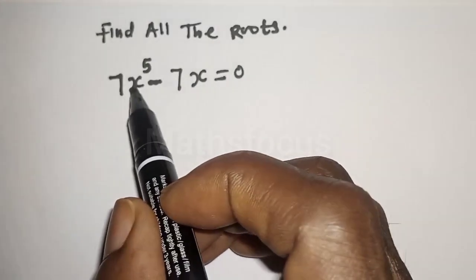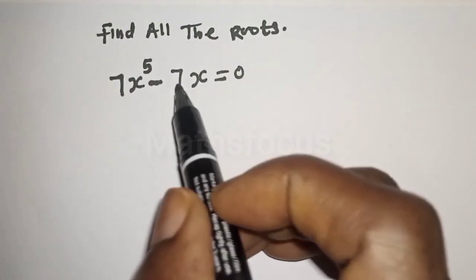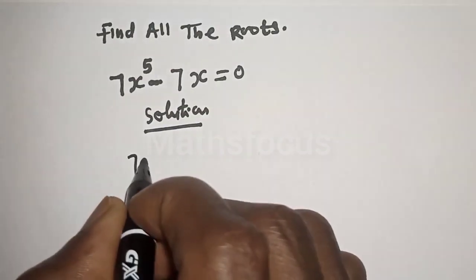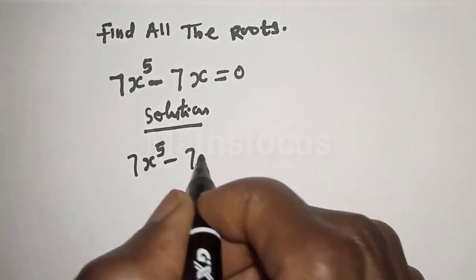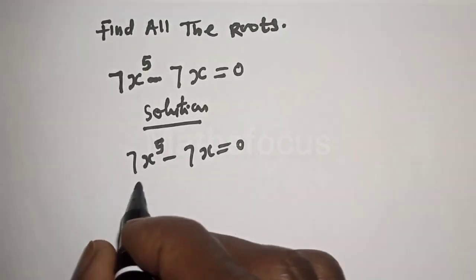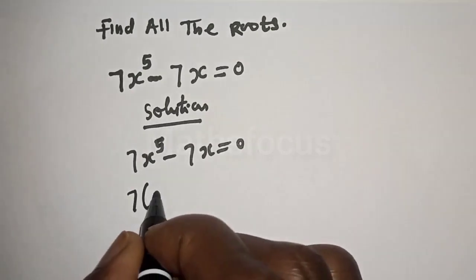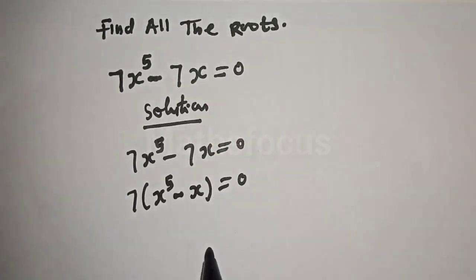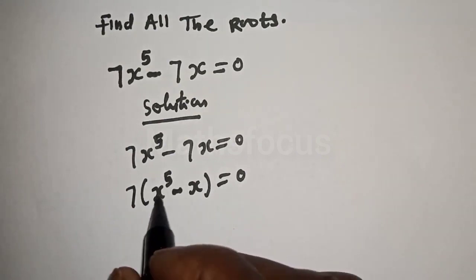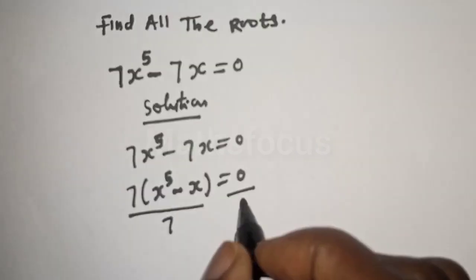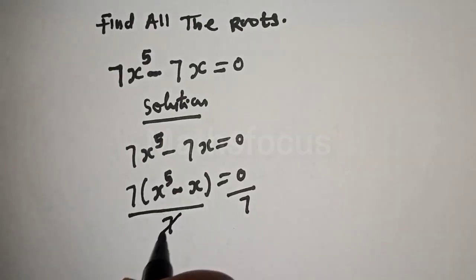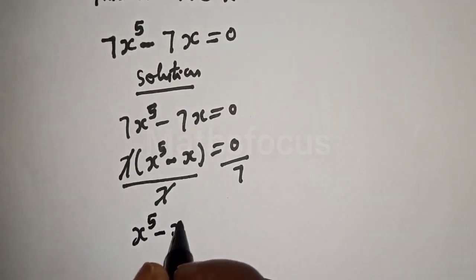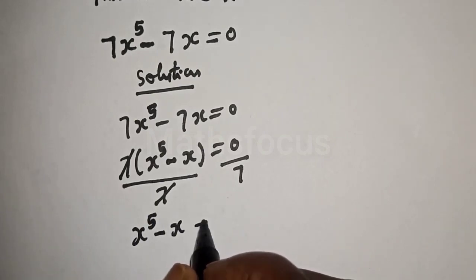Find all the roots of 7s raised to the power 5 minus 7s is equal to 0. Now 7 is common, let's bring it out. This gives us 7 brackets s raised to the power 5 minus s is equal to 0. Then we divide both sides by 7, and we have s raised to the power 5 minus s is equal to 0.